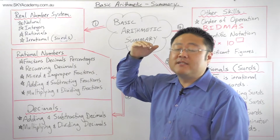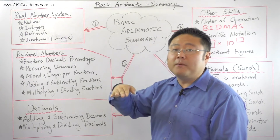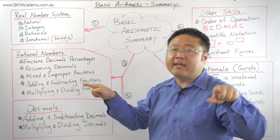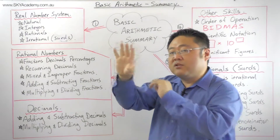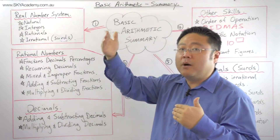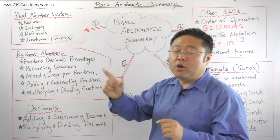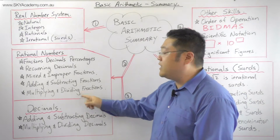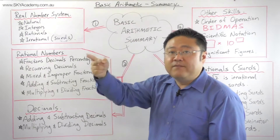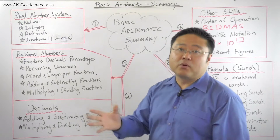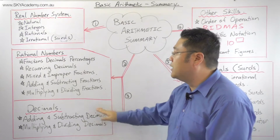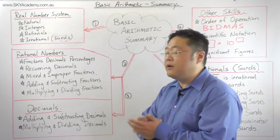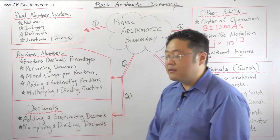We looked at multiplying and dividing fractions, which involves simplifying by cancellation. You can cancel factors that appear on the top and bottom diagonally — any top with any bottom that shares a common factor. When dividing fractions, you invert and multiply, or equivalently, multiply by the reciprocal.